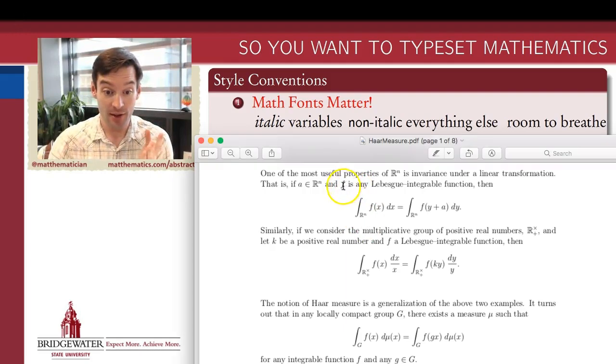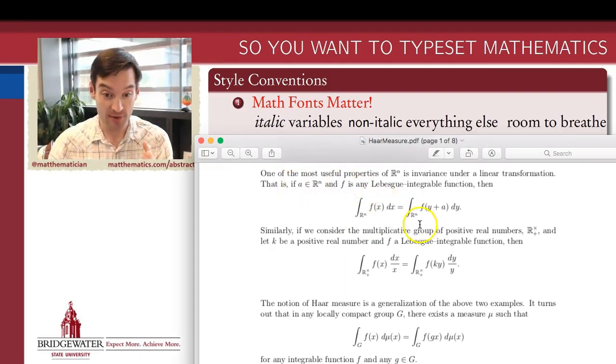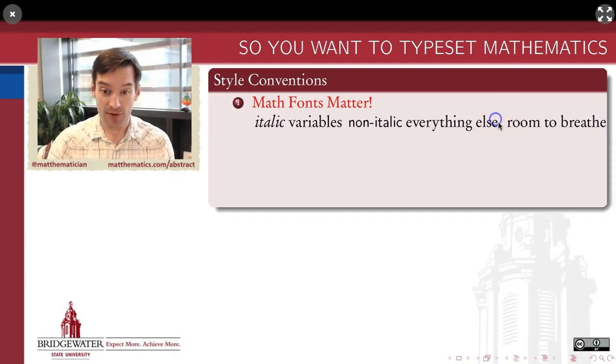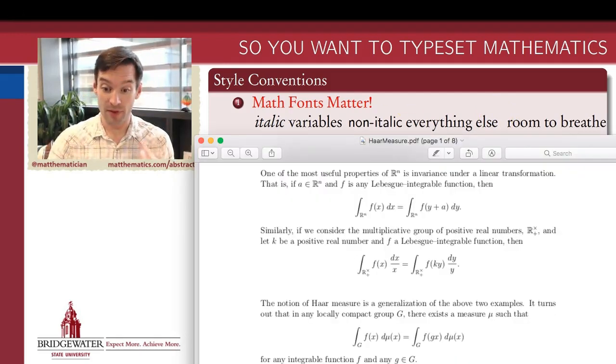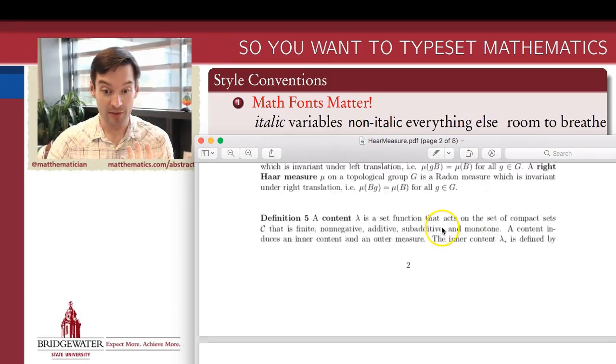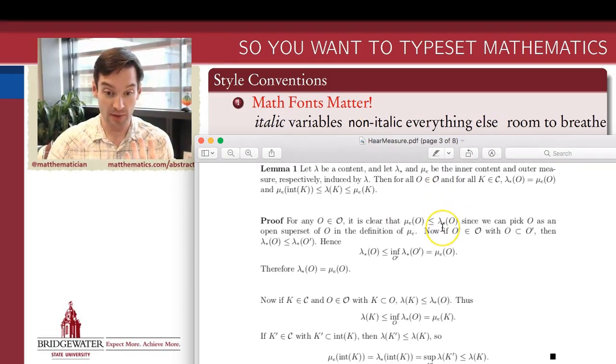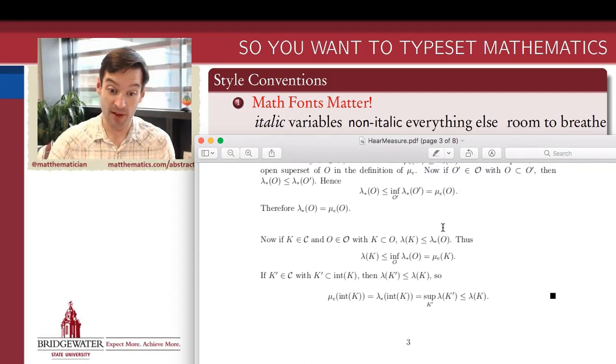That goes whether the variables represent a number or a group or a set or anything. Any letter that you use in a mathematical equation or expression should always be typeset in italics. But everything else, that includes the numbers, the operators, the plus signs, the equal signs, all that stuff should not be in italics.